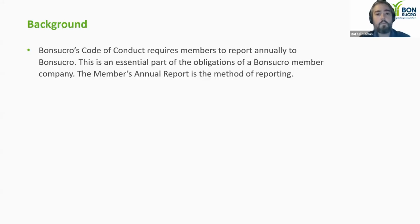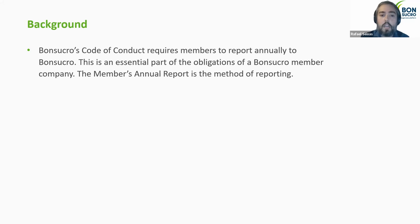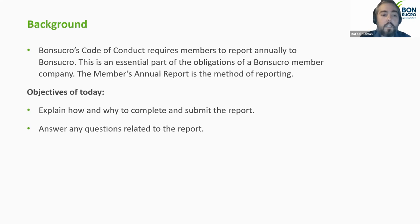We'll start with a little bit of background. As you know, Bonsucro's code of conduct requires members to report annually to Bonsucro, and this is an essential part of the obligations of member companies. The member annual report is the method of reporting — that's how we receive the information the code requires. The objectives for today are first to explain how and why to complete and submit the reports, and then answer any questions you may have.